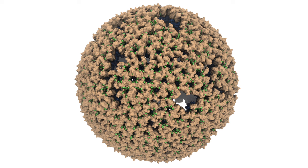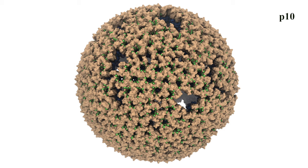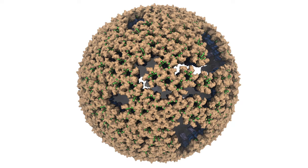In an immature RSV capsid model, it consists of four different regions: the spacer peptide nucleocapsid domain, the C-terminal domain, the N-terminal domain, and a small peptide called P10. Together, they form an incomplete spherical shell. The lack of symmetry of this protein shell is the reason why it was so challenging to obtain a high-resolution structure.